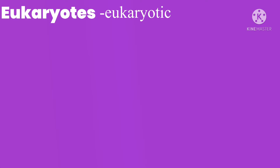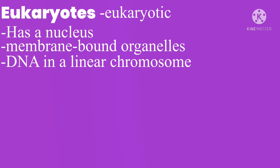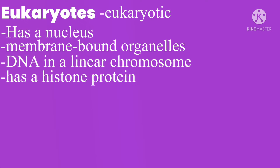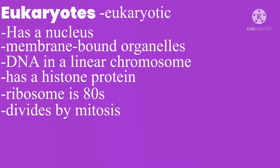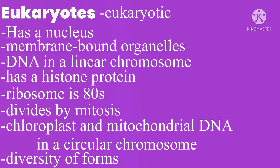Now for domain Eukaryotes. As the name suggests, they are eukaryotic cells. Its characteristic features are cells with a nucleus and membrane-bound organelles, like human cells. DNA in the nucleus is arranged in a linear chromosome with a histone protein, like human cells. The ribosome size is 80S. It divides by mitosis. Chloroplast and mitochondrial DNA is in a circular chromosome. There is also a great diversity of forms, meaning there can be unicellular, multicellular, and colonial organisms.